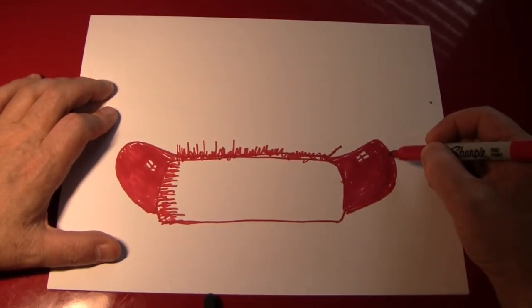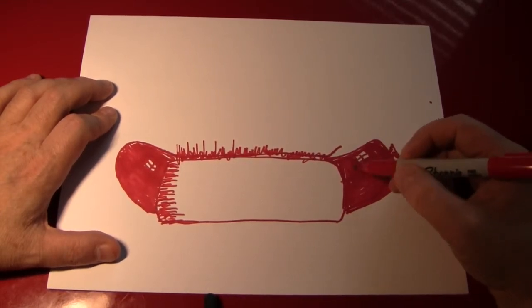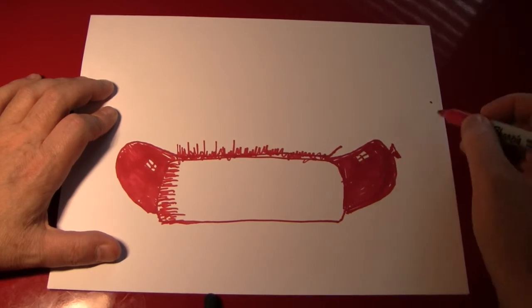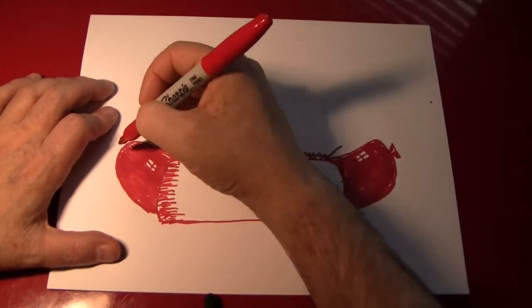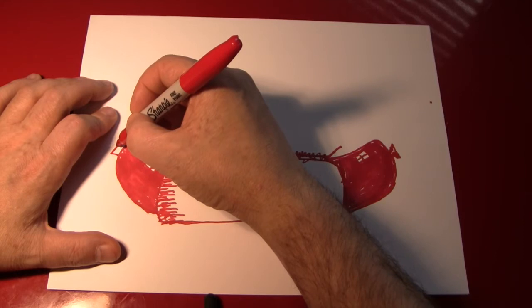Other things you can do is you can put a little triangle here, kind of color that in and leave a little white stripe. And that'll look like it used to be tied to another hot dog. You can do that on both ends if you want. I'm gonna.